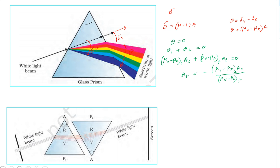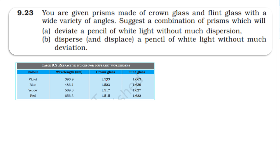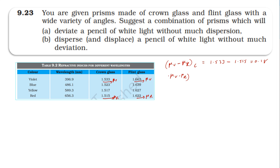Substituting values: for crown glass, μv = 1.533 and μr = 1.515, so μv − μr = 0.018. For flint glass, μv = 1.663 and μr = 1.622, so μv − μr = 0.041. These dispersive power values are then substituted into the equation to find the required angle ratio.